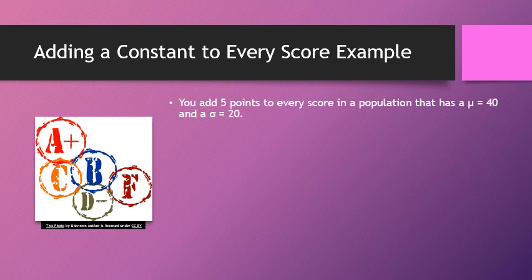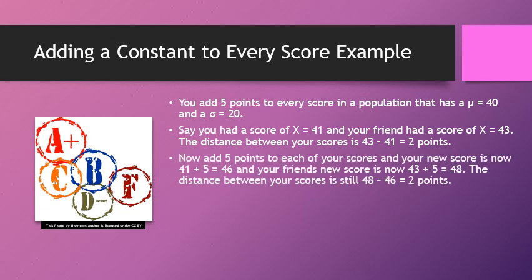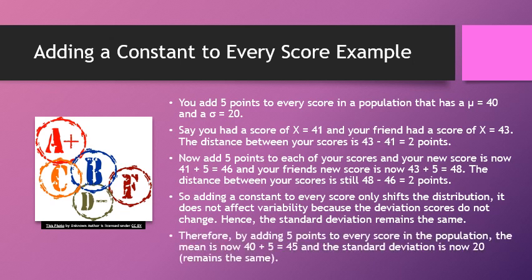Say you add 5 points to every score in a population with a mean of 40 and a standard deviation of 20. If your score was 41 and your friend's was 43, the distance between scores is 2 points. After adding 5 points, your new score is 46 and your friend's is 48, but the distance is still 2 points. Adding a constant only shifts the distribution; it does not affect variability. So the mean is now 45, but the standard deviation is still 20.